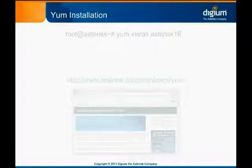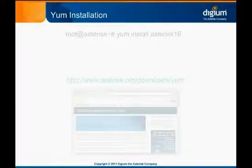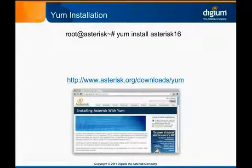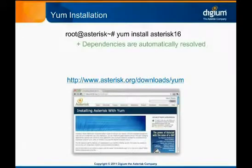If you have followed along with the modules in this chapter, you've learned that the Yum Package Manager can be a useful tool to install software packages that Asterisk requires in order to run properly. Yum and other Package Managers can also be used to install Asterisk, if the distribution maintainers have configured their package repositories to include it. Digium provides a Yum repository on Asterisk.org that allows you to install up-to-date Asterisk packages directly from Digium. You can visit asterisk.org/downloads/yum to see how to set this up. The primary benefit of installing Asterisk using a Package Manager is that dependencies are automatically resolved, making installation as simple as possible.